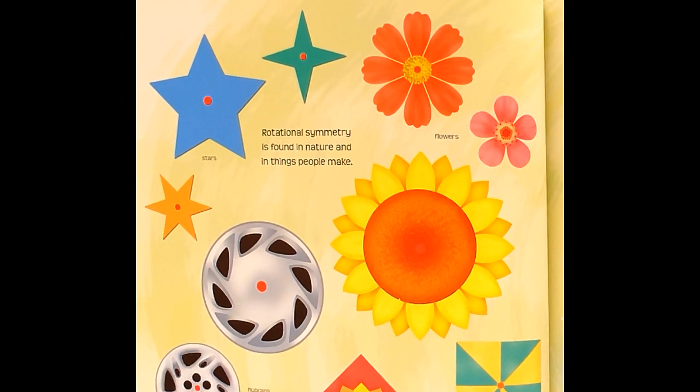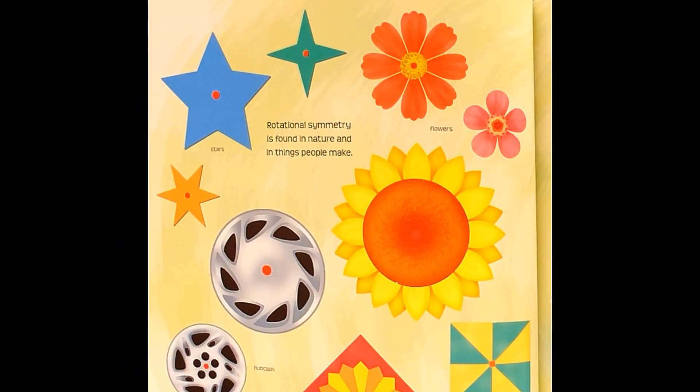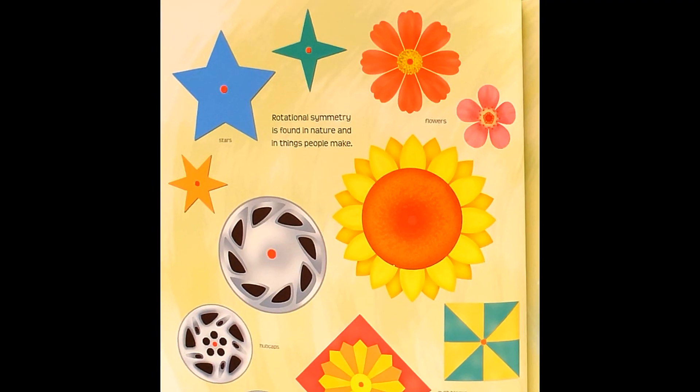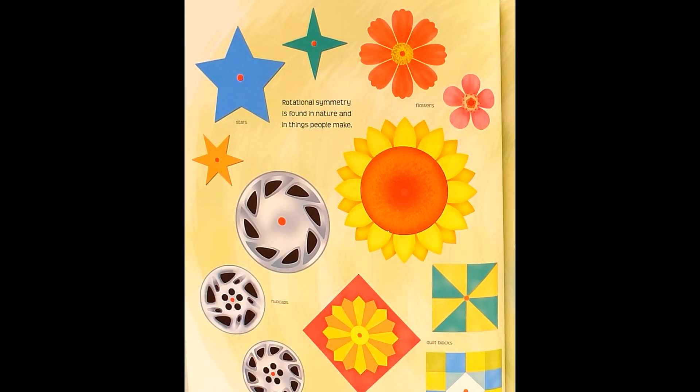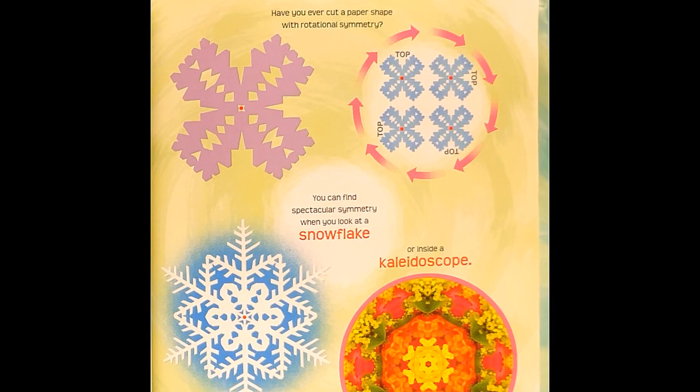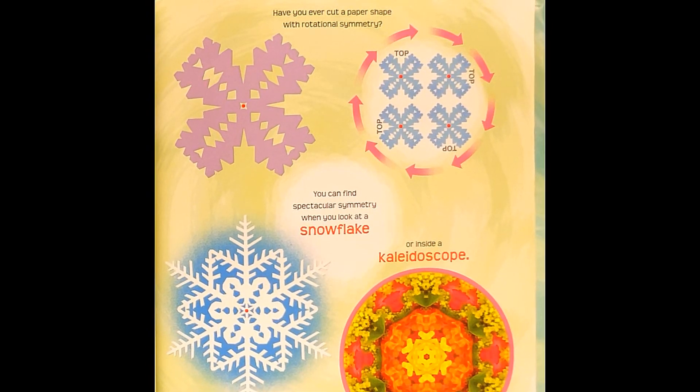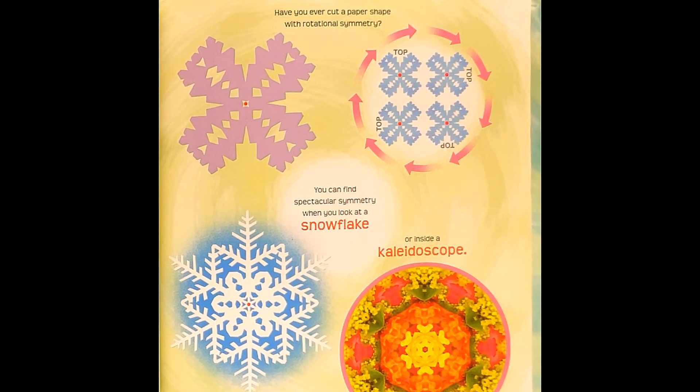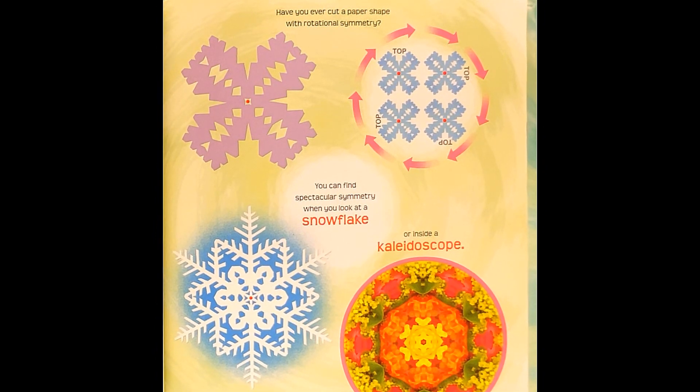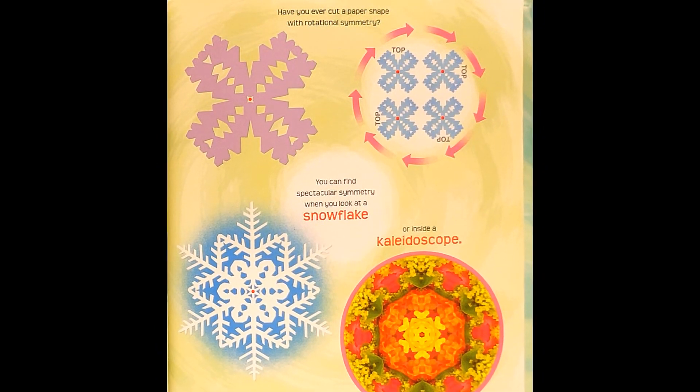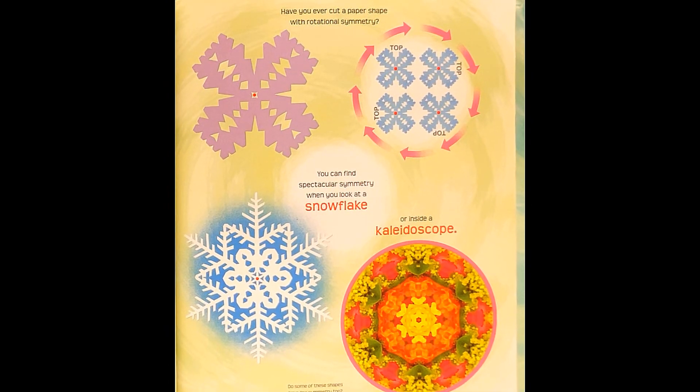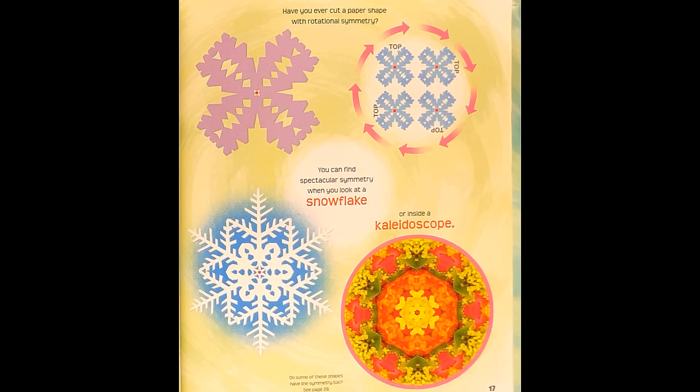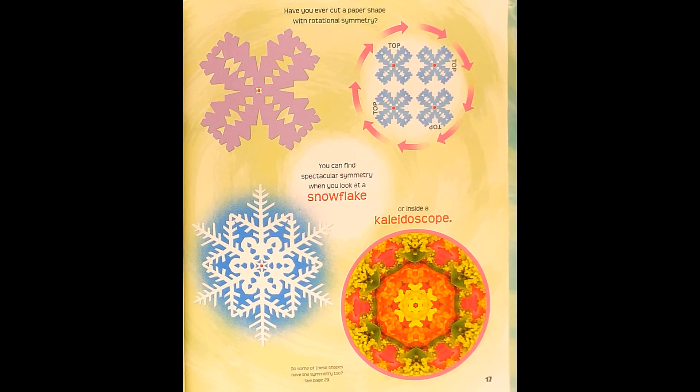Rotational symmetry is found in nature and in things people make. Stars, flowers, hubcaps, quilt blocks. Have you ever cut a paper shape with rotational symmetry? You can find spectacular symmetry when you look at a snowflake or inside a kaleidoscope. Do some of these shapes have lines of symmetry too? See page 29.